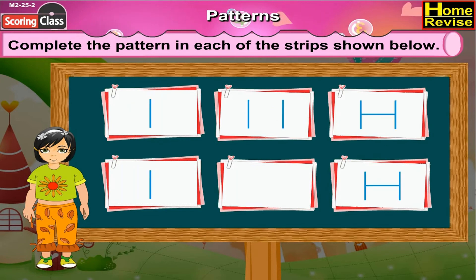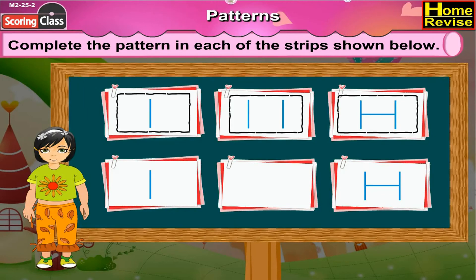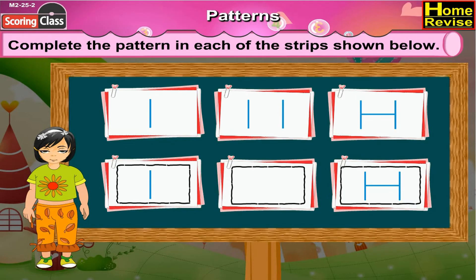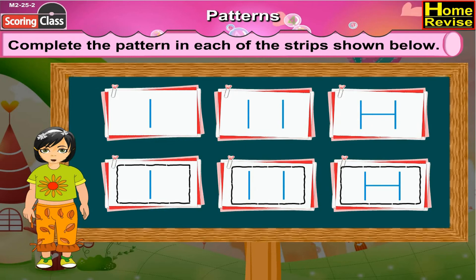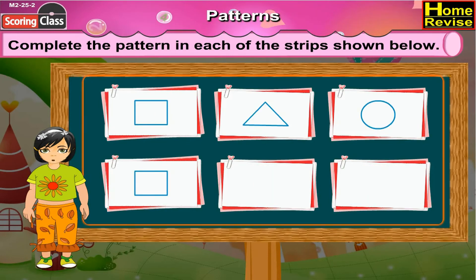Now the next pattern strip. Can you notice the first three boxes of the pattern strip? Now let us see the next three boxes. The first and third box are filled, the second box is empty. Here we will draw the two standing lines as shown in the previous second box.